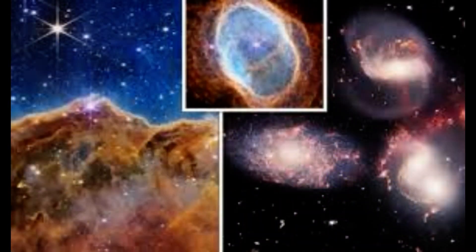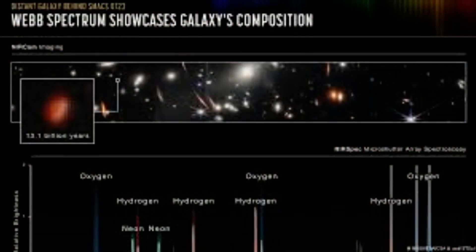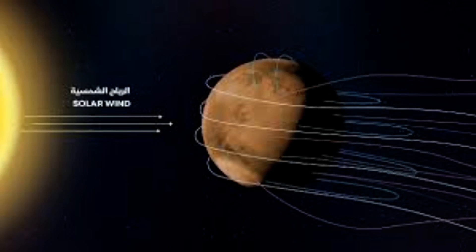Villanueva and his team also released Webb's first near-infrared spectrum of Mars, which shows minute variations in brightness between hundreds of different wavelengths. Preliminary analysis of the spectrum shows a rich set of spectral features that contain information about dust, icy clouds, what kind of rocks are on the planet's surface, and the composition of the atmosphere.